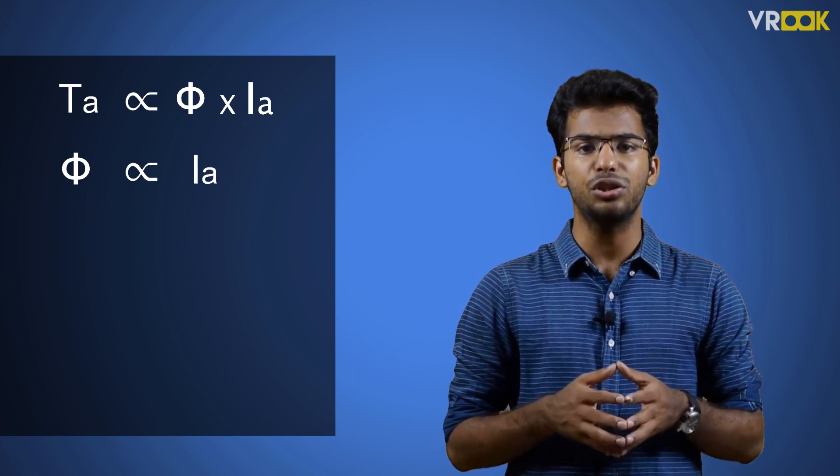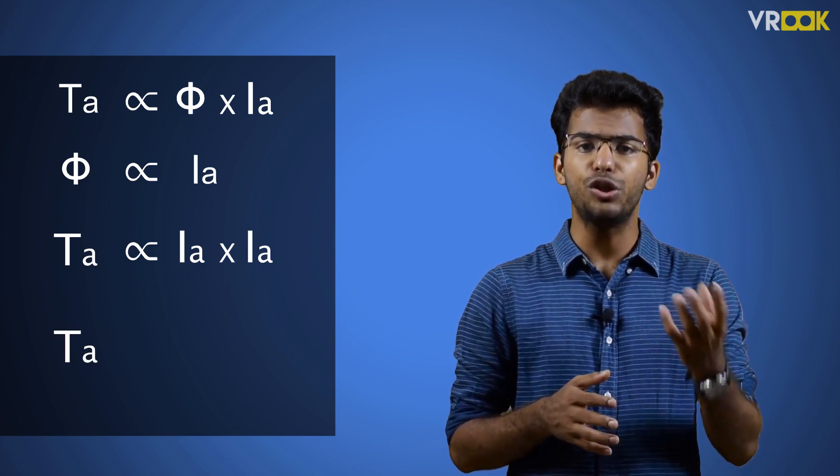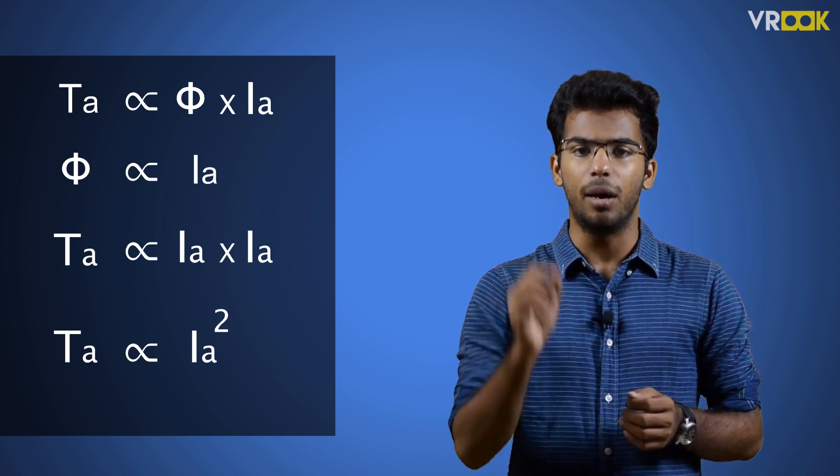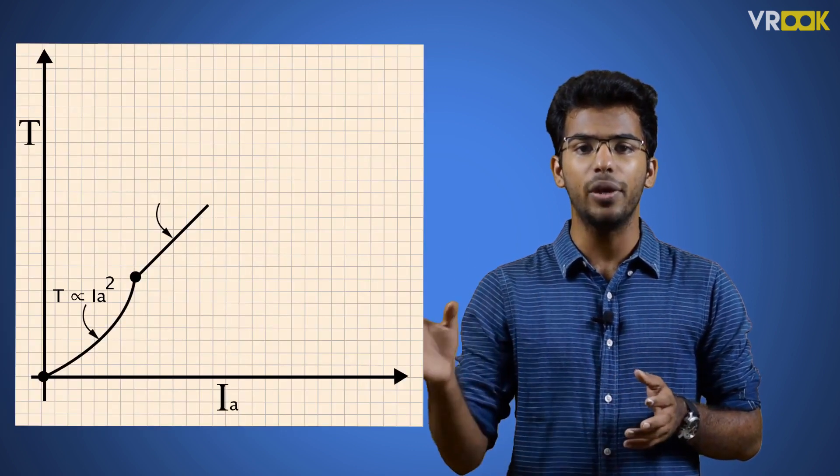Since flux φ is dependent on the armature current in a series motor, we can say that flux is proportional to armature current, i.e., φ ∝ Ia. By this, the torque-current relationship becomes Ta ∝ Ia × Ia, with φ replaced by Ia. So the armature torque is directly proportional to the square of the armature current until a particular point, and this relation is represented on the graph as a parabolic curve.